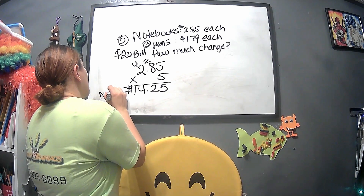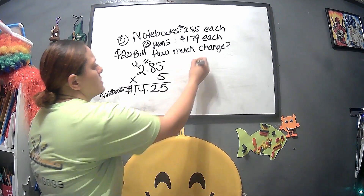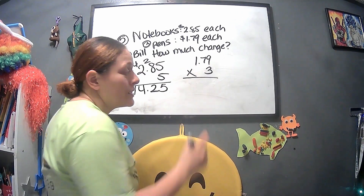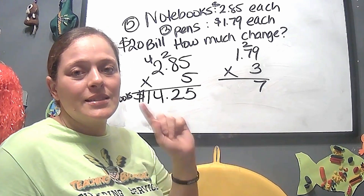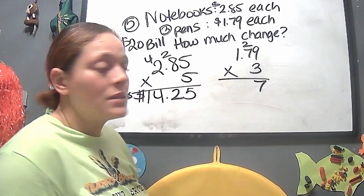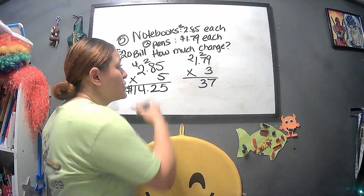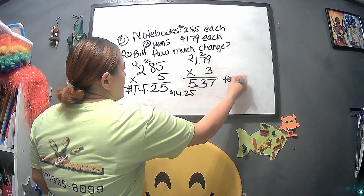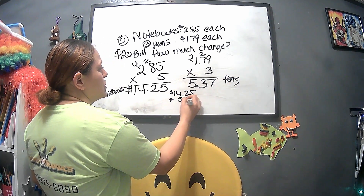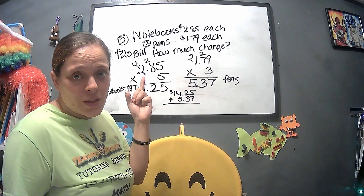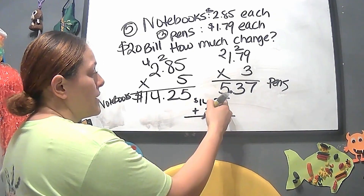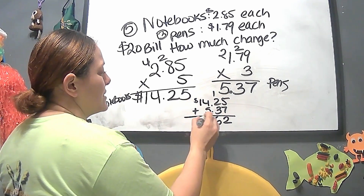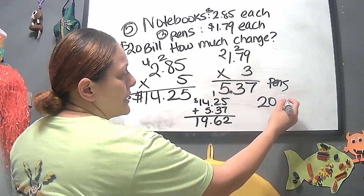For three pens at $1.79 each: 1.79 times 3 — nine times three is 27, seven times three is 21 plus two is 23, three times one is three plus two is five. So three pens cost $5.37. Now add the totals: $14.25 plus $5.37. Seven and five is 12, carry one — two plus three plus one is six, four plus five is nine, one plus nothing is one. Total spent is $19.62.